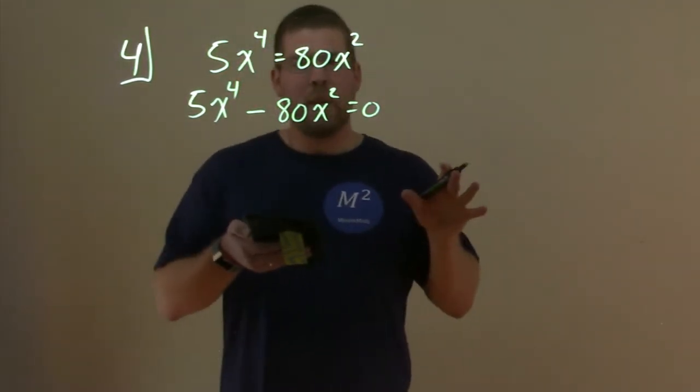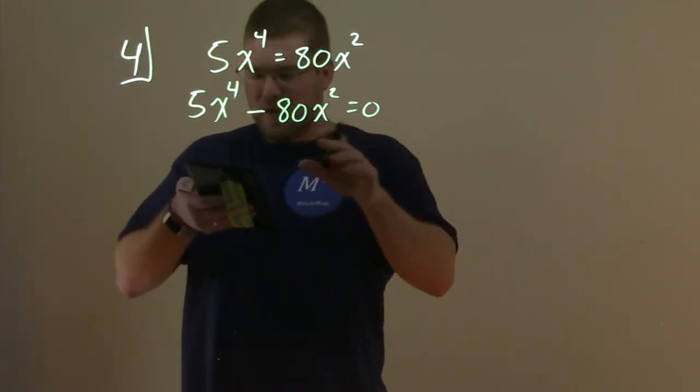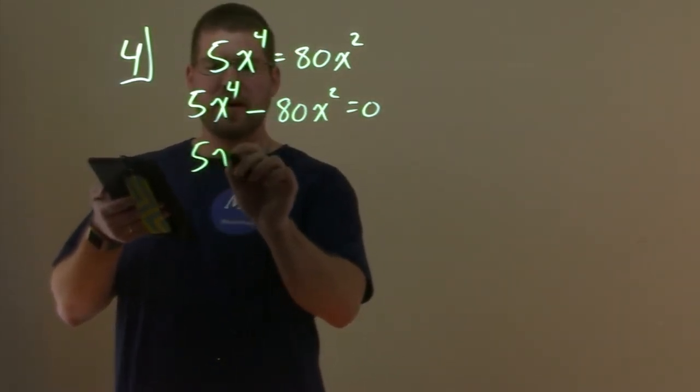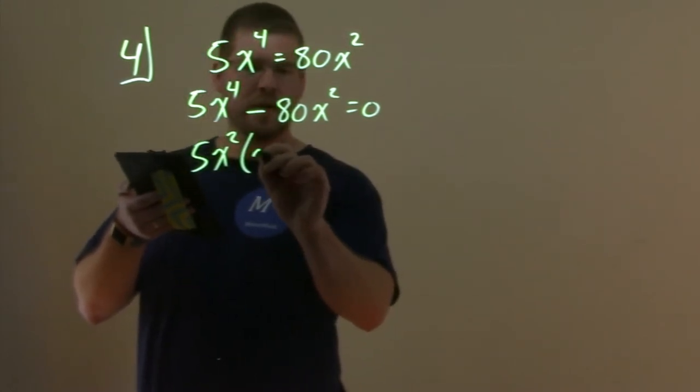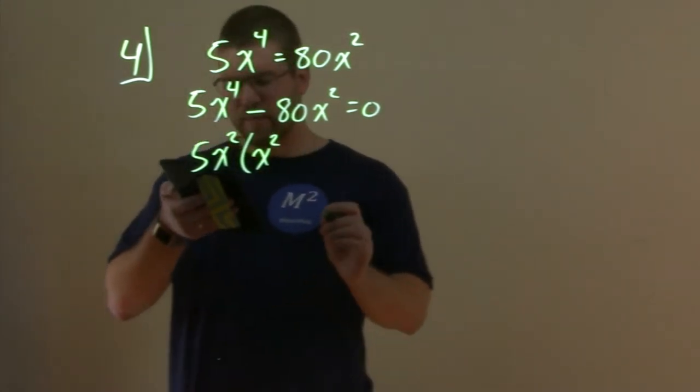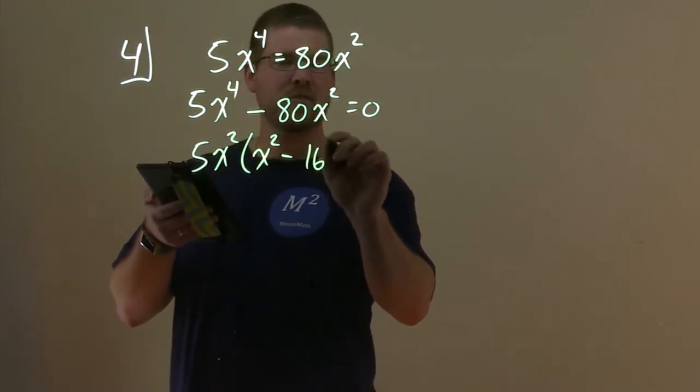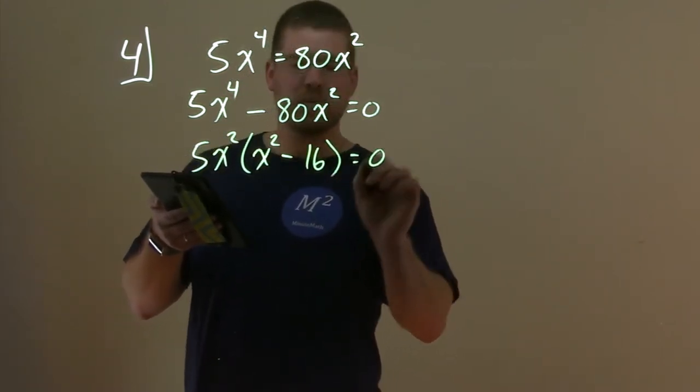From there, we need to pull something out. What's a common factor on both of these? And 5 goes in 80, x^2's in both. So let's pull out a 5x^2. Why not? We can. Left with x^2 here, minus, well, 80 divided by 5 is 16, and the x^2's gone.